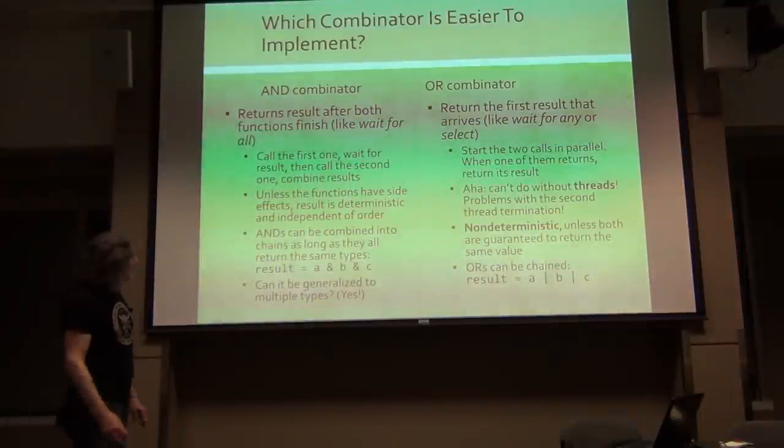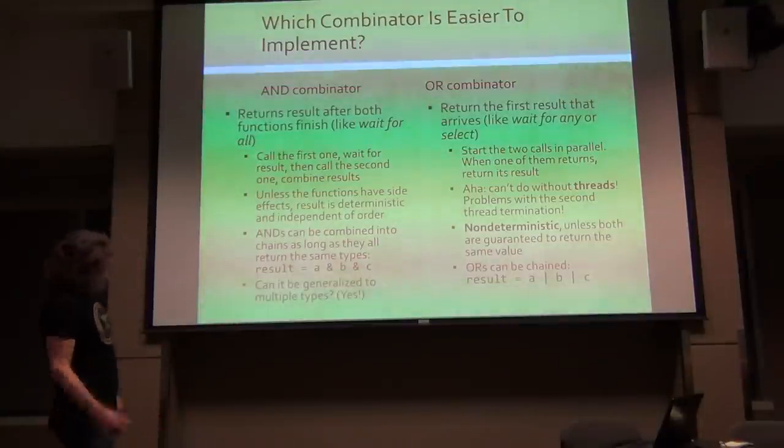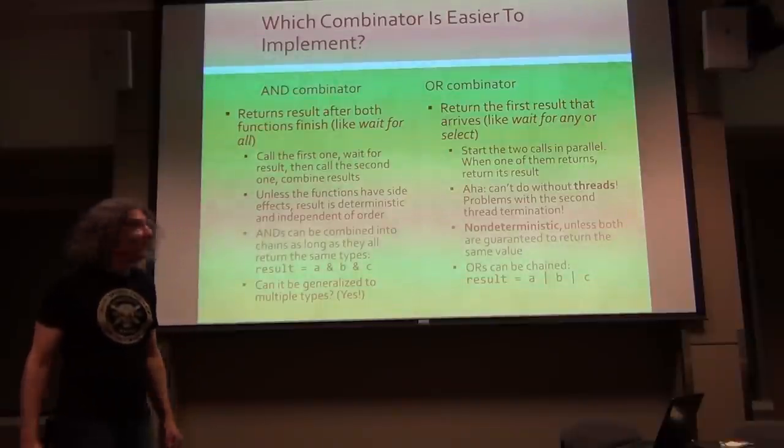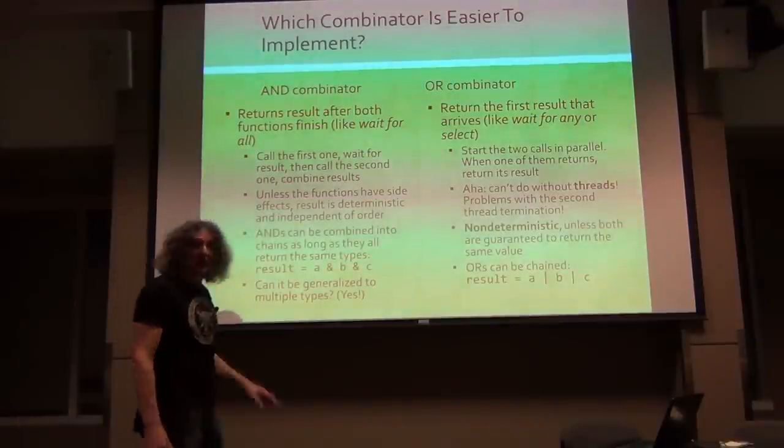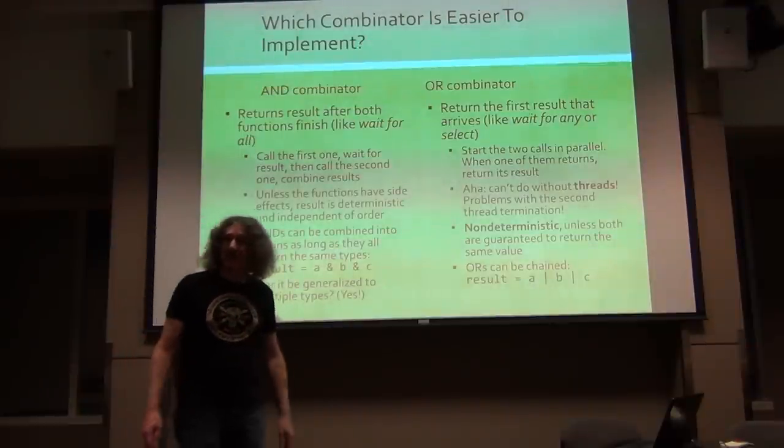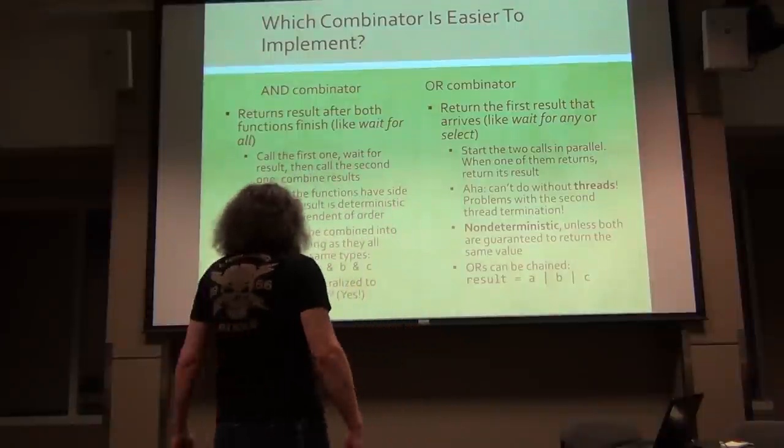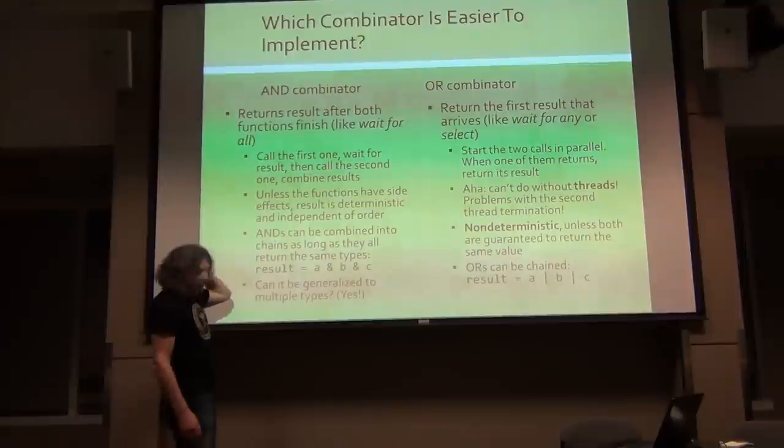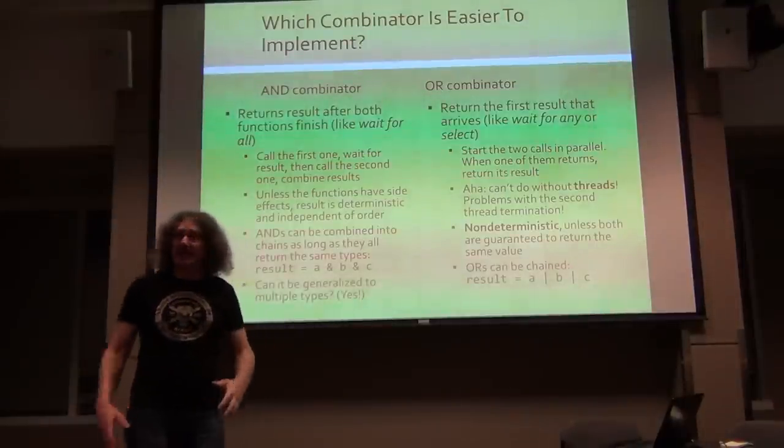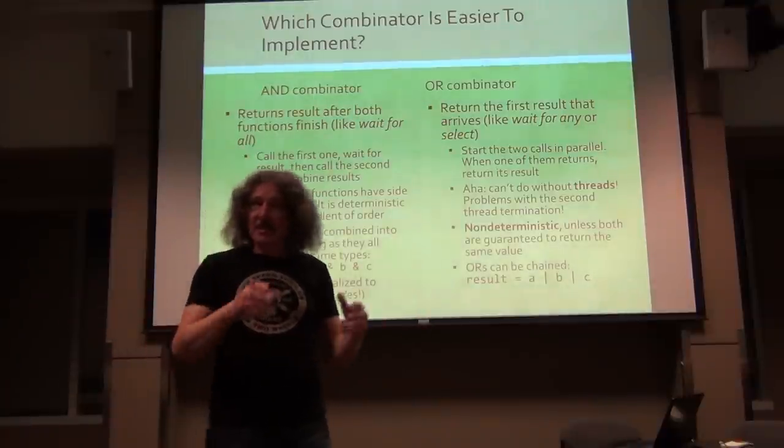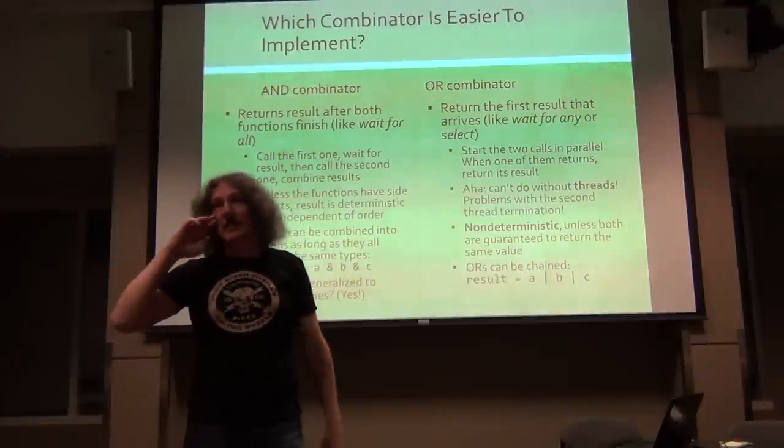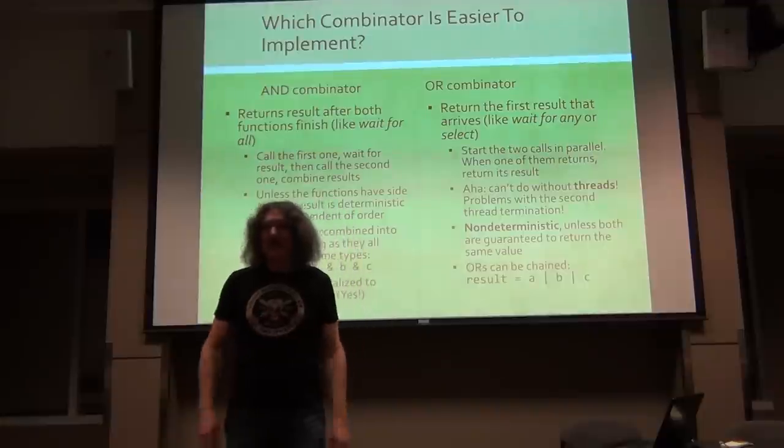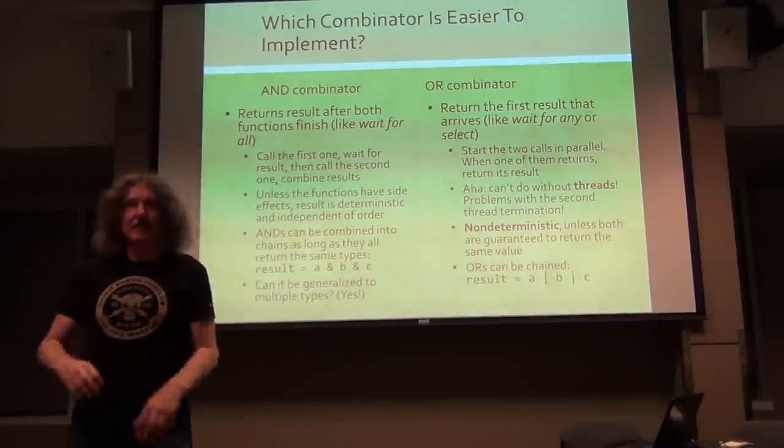So if they don't have side effects, visible side effects - I mean they can spin the disk and stuff like this - but they don't have these visible side effects, then the result is deterministic. And it's also independent on the order in which you start at least two, because you have to wait for both of them to finish, no matter what. Now, a nice property of this AND combinator is that you can check that. I mean you can imagine putting a bunch of ANDs on top of each other, and again, the result, if there are no side effects, is always the same, no matter how you connect these ANDs.